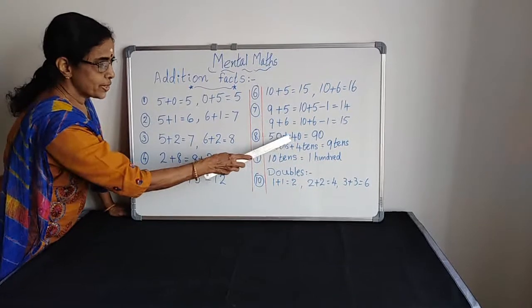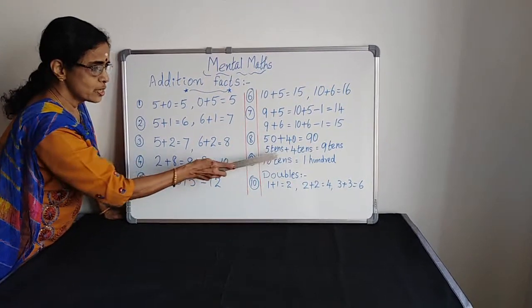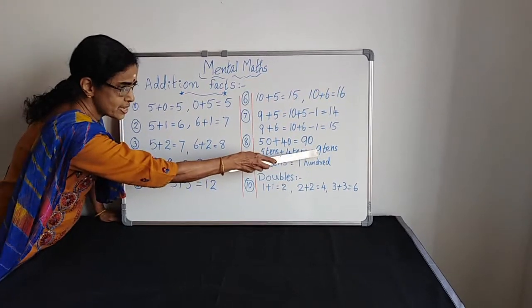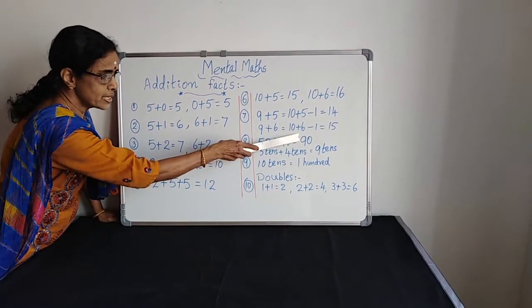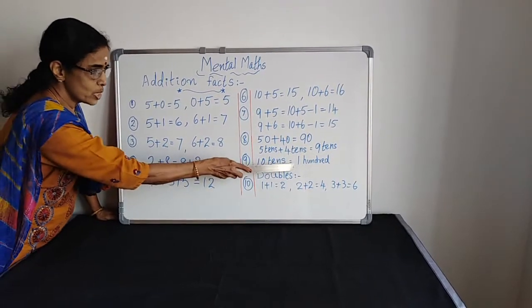50 plus 40. What is 15? 5 tenths. What is 40? 4 tenths. So 5 tenths plus 4 tenths makes 9 tenths, which is equal to 90. Rule 9: 10 tenths equals 100.